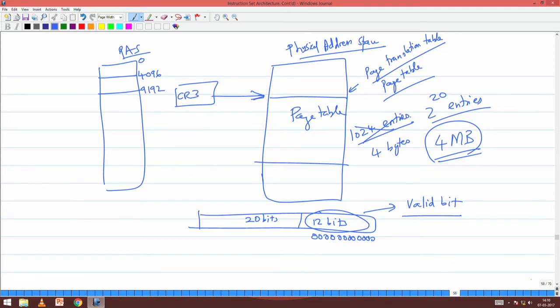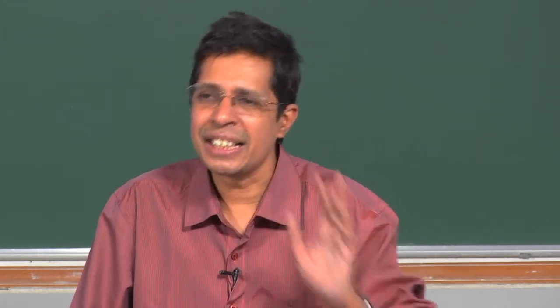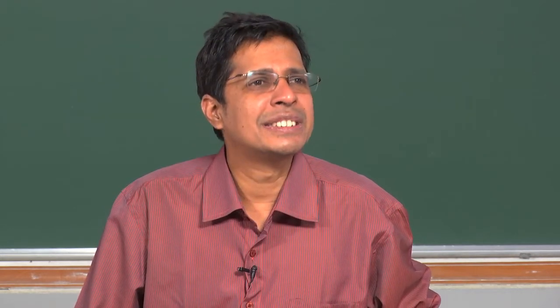One bit is the valid bit. Another bit I call it the clean bit, but the western world calls it the dirty bit. What do you mean by dirty bit? After I load a page from disk to memory, have I gone and changed something in it? If I go and change something there, immediately that dirty bit will become 1. If I do not change anything, then the dirty bit will be 0.